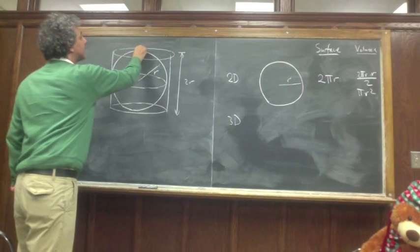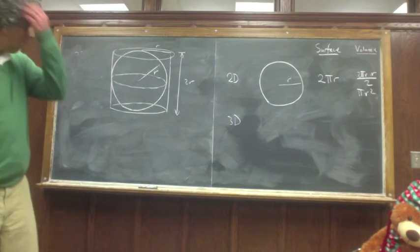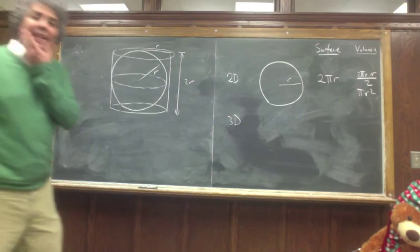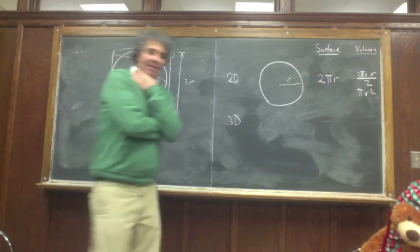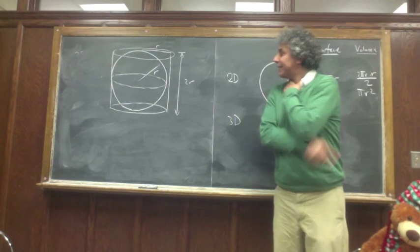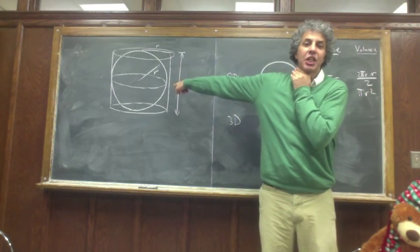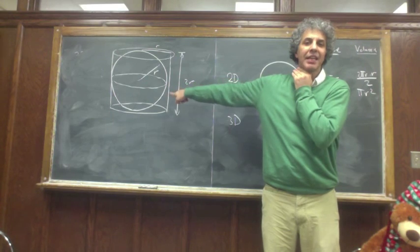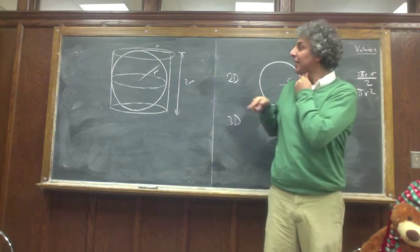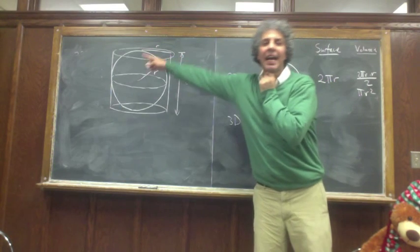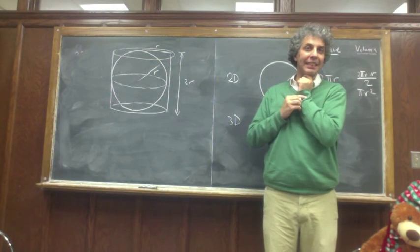And right here the radius will be R. Now, what Archimedes said — and it's an amazing thing — he said that the area of the sphere is identical. He proved it: the surface area of the sphere is identical to the side surface area of the cylinder.